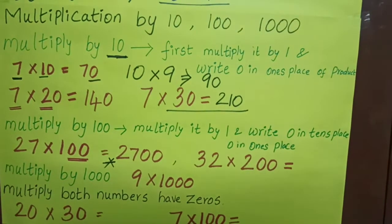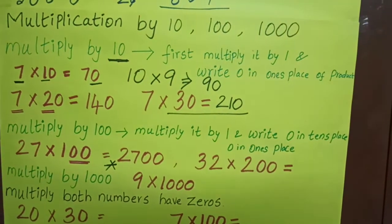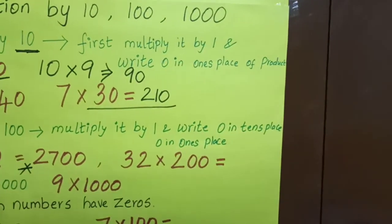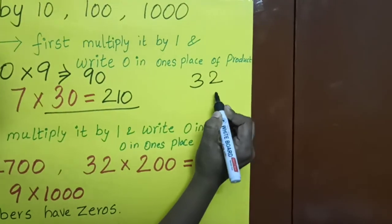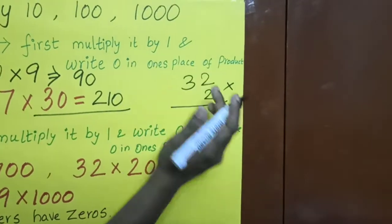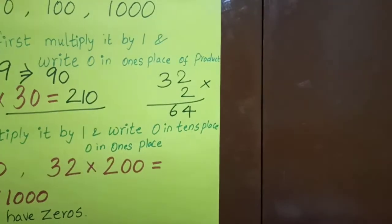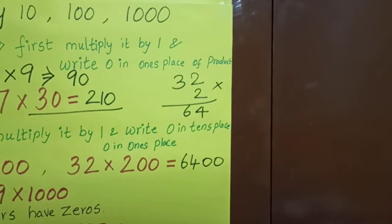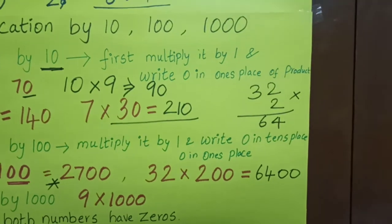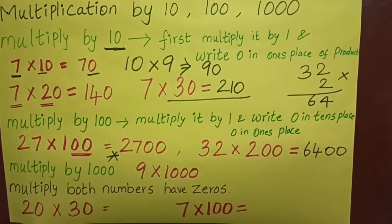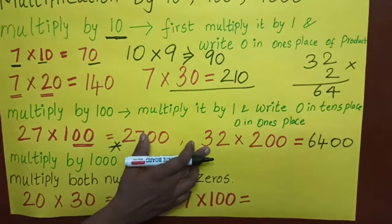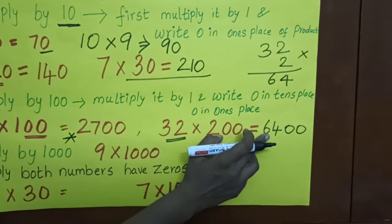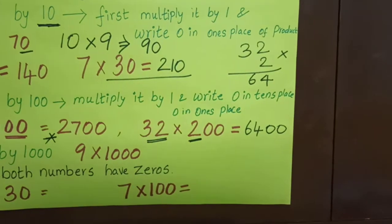Next: 32 into 200. How will you do? First, we have to multiply 32 into 2. 2 twos are 4, 2 threes are 6 — so 64. How many zeros? 1, 2 — two zeros. So the answer is 6400. Whatever the bigger number, just multiply with the number alone, then after getting the product, add on the zeros. That's all.